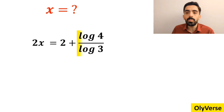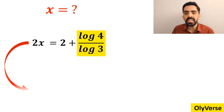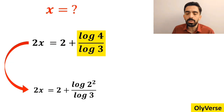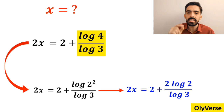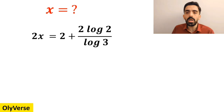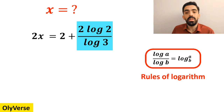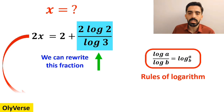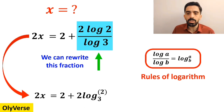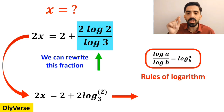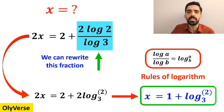Now it's time to move on to the second fraction. Instead of log of 4, we can write 2x equals 2 plus log of 2 squared over log of 3. And this simplifies to 2x equals 2 plus 2 times log of 2 over log of 3. According to the rules of logarithms, log of a divided by log of b is equal to log of a with base b. Therefore, 2x equals 2 plus 2 times log of 2 with base 3. And finally, the value of x is equal to 1 plus log of 2 with base 3. This is the simplest possible solution for x.